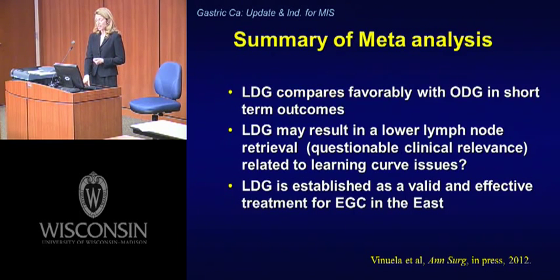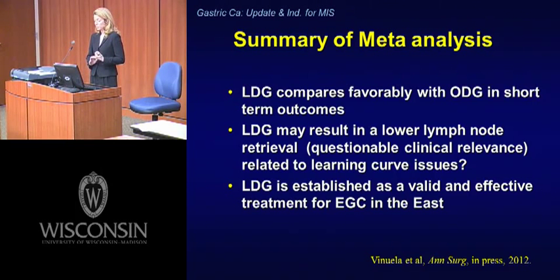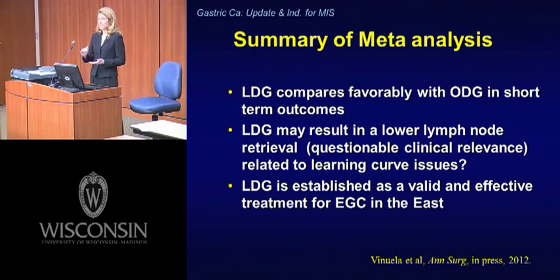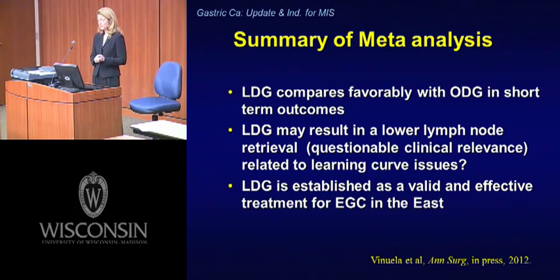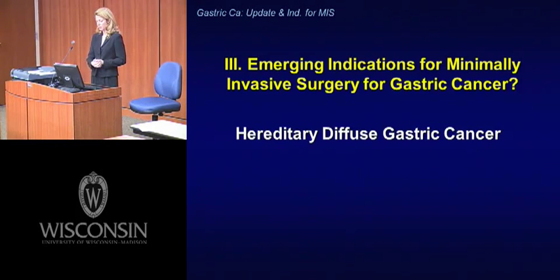The meta-analysis supports the idea that the laparoscopic approach compares favorably — it may result in lower lymph node retrieval, but that could be due to learning curve issues. As long as you meet the minimum oncologic standard of 15 nodes, it is acceptable to continue. The laparoscopic approach is established as a valid treatment for early gastric cancer in the East, and we still need to prove it in the West, but we're getting there.